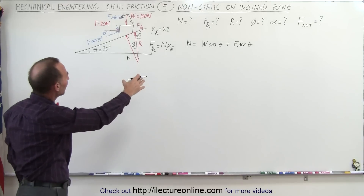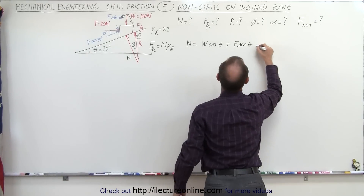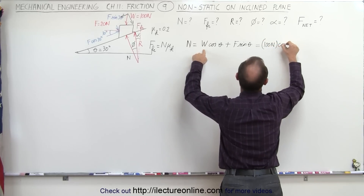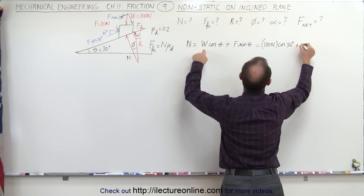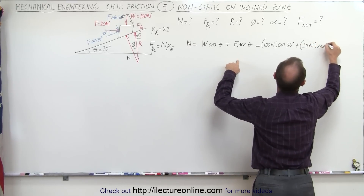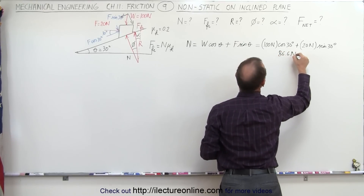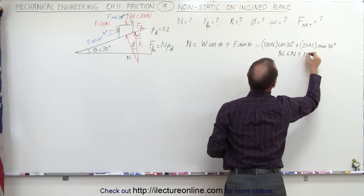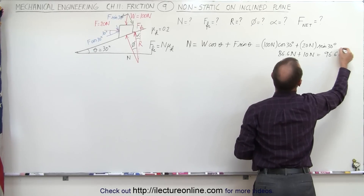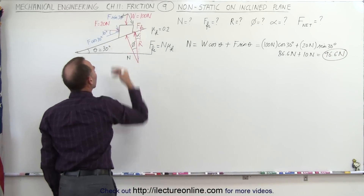Now since we know the weight, the force, and the angle, we can calculate the normal force. It's equal to 100 newtons times cosine of 30 degrees, plus 20 newtons times sine of 30 degrees. Cosine of 30 is 0.866, giving 86.6 newtons, plus half of 20 is 10 newtons, for a total of 96.6 newtons — that's the normal force, the reactionary force of the incline pushing back against the block.